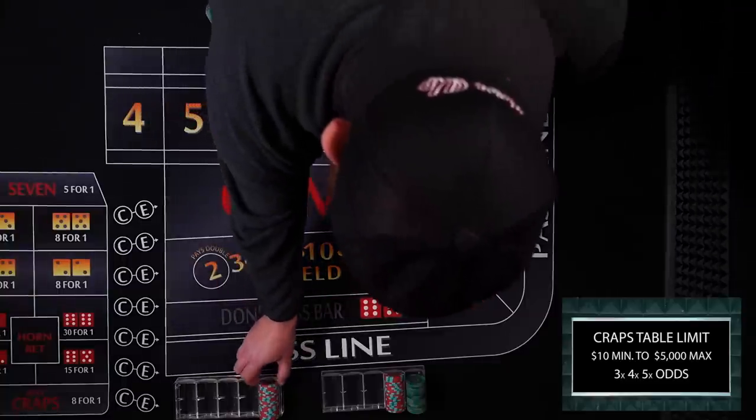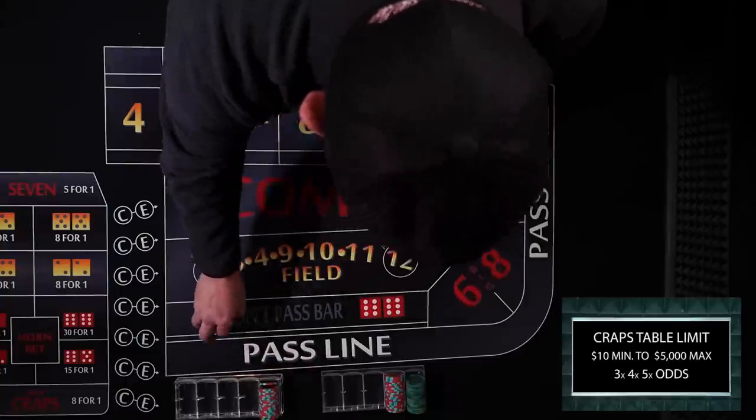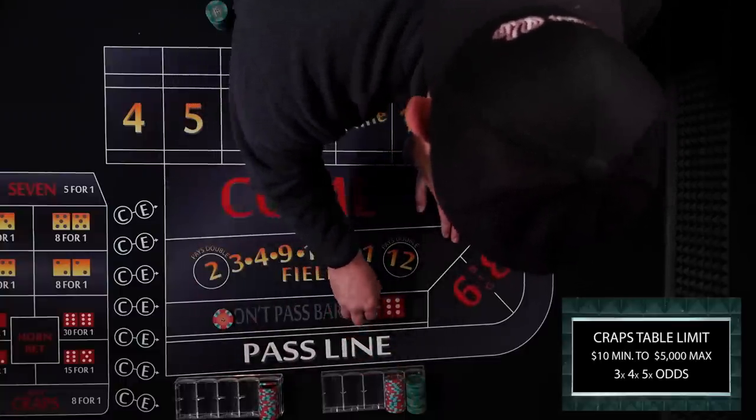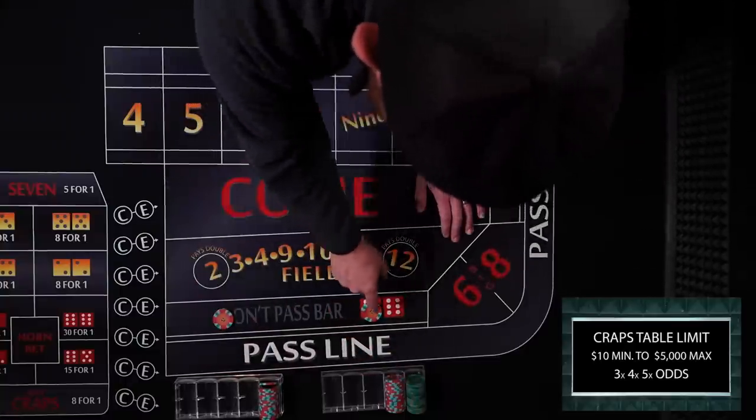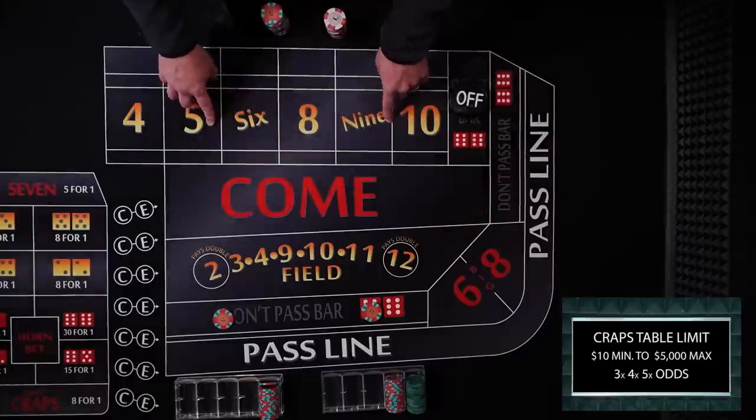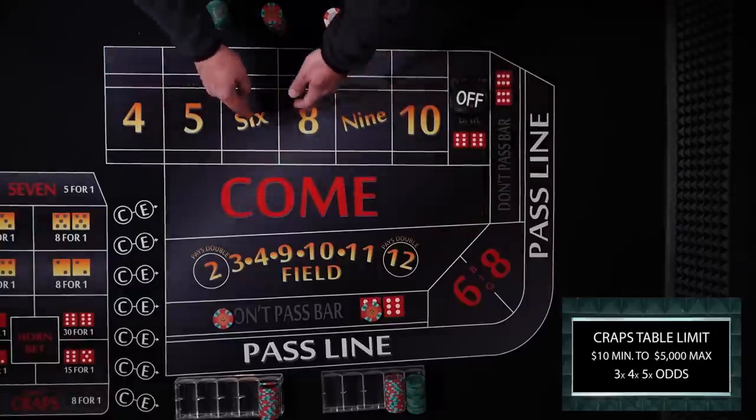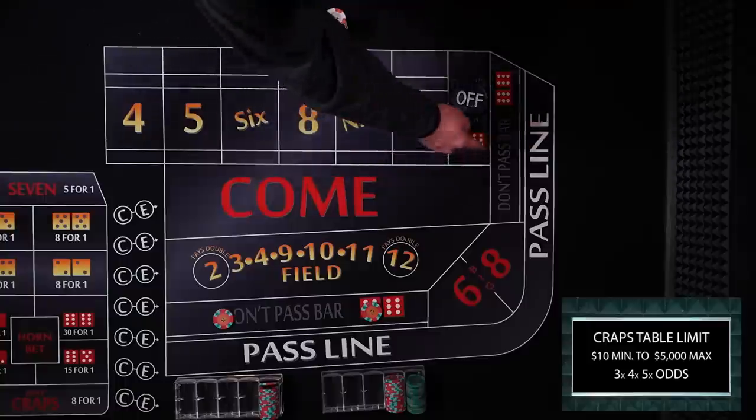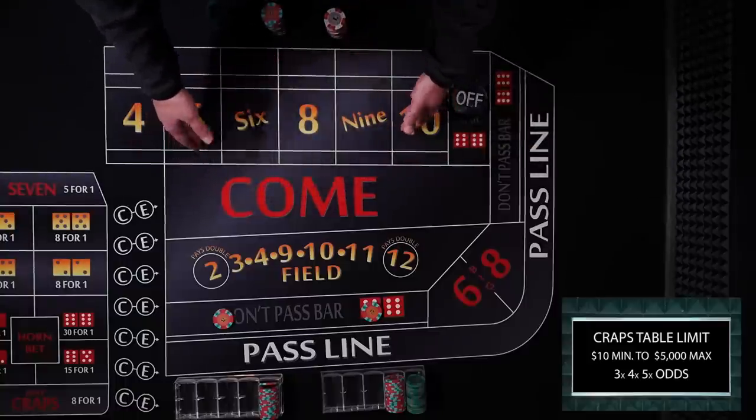Player A is going to be my flat better and he has a $100 bankroll. And player B here has a $500 bankroll and he's going to be playing odds maximum odds on a 3, 4, 5 times table. I'm going to use the don't come to get 2 points for each player working.